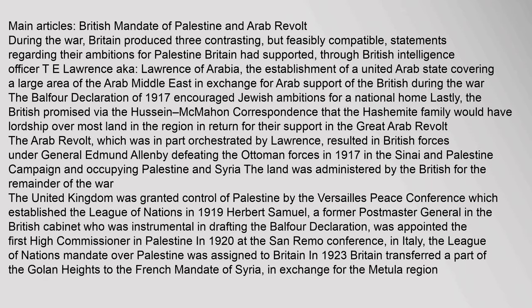During the war, Britain produced three contrasting but feasibly compatible statements regarding their ambitions for Palestine. Britain had supported, through British intelligence officer T.E. Lawrence, also known as Lawrence of Arabia, the establishment of a united Arab state covering a large area of the Arab Middle East in exchange for Arab support of the British during the war. The Balfour Declaration of 1917 encouraged Jewish ambitions for a national home. Lastly, the British promised via the Hussein-McMahon correspondence that the Hashemite family would have lordship over most land in the region in return for their support in the Great Arab Revolt. The Arab Revolt, which was in part orchestrated by Lawrence, resulted in British forces under General Edmund Allenby defeating the Ottoman forces in 1917 in the Sinai and Palestine Campaign and occupying Palestine and Syria.